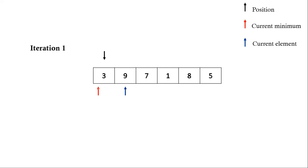We update the current element and check whether it is smaller than the current minimum. 9 is not smaller than 3, so we move forward. 7 is also not smaller. Now 1 is smaller than 3, so we update current minimum to point to element 1. We proceed: 8 is not smaller than 1, 5 is not smaller than 1, and we reach the end of the array. After one full scan from left to right, current minimum points to the smallest element of the array, which is 1.